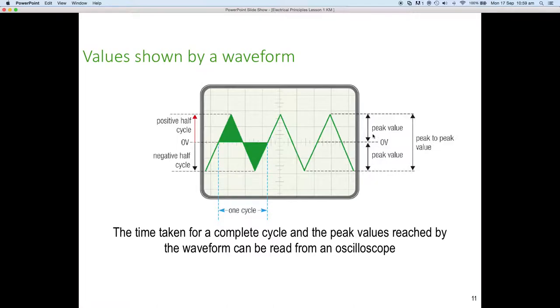So they're called the peak values. If we want to measure the voltage from the peak positive to the peak negative, it's called the peak to peak value. So peak to peak.